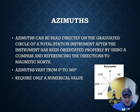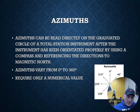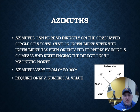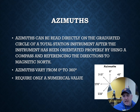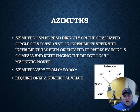Azimuths are read directly from a graduated circle. If you have a north reference pointing up, you go clockwise from that north reference around the circle to define your azimuth. One nice thing about azimuths is that when adding or subtracting angles, it's straightforward math. Bearings are a little more confusing because you're going from different reference parts of the meridian. Azimuths are always a numerical value — you never assign a direction to an azimuth, so you'd never say 315 degrees east.